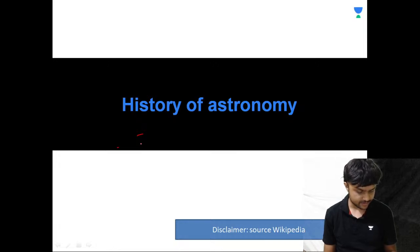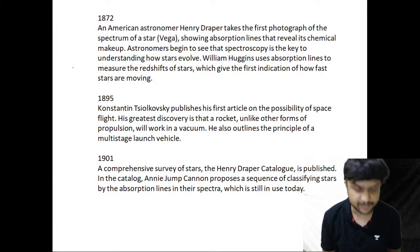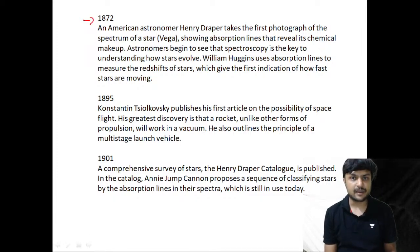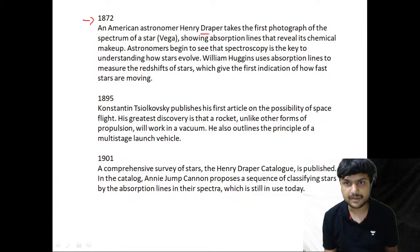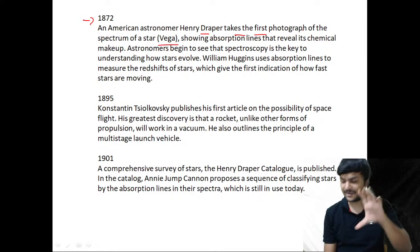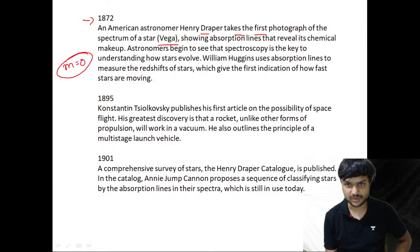When we talk about the history of astronomy, we are starting from the year 1872. American astronomer Henry Draper takes the first photograph of the spectrum of the star Vega. Vega is one of the stars we consider as the reference point, with its apparent magnitude set to zero.